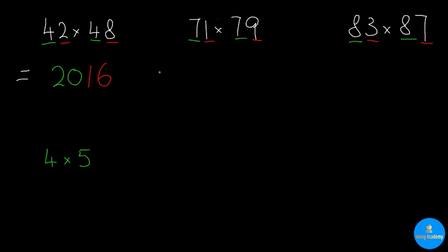How about 71 times 79? The last two digits is given by 1 times 9, which is 09. It is very important to remember that we have to put 2 digits, but not 1 here. After that, I have to do 7 times the next number after 7, which is 8. 7 times 8 is 56. And 5,609 is the final answer.